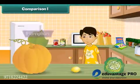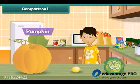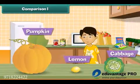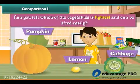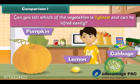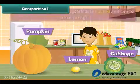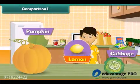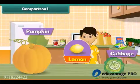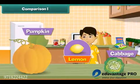Sandy has a pumpkin, a cabbage, and a lemon. Can you tell which of the vegetables is lightest and can be lifted easily? Yes, lemon is lighter than the other two vegetables. He can easily lift a lemon.